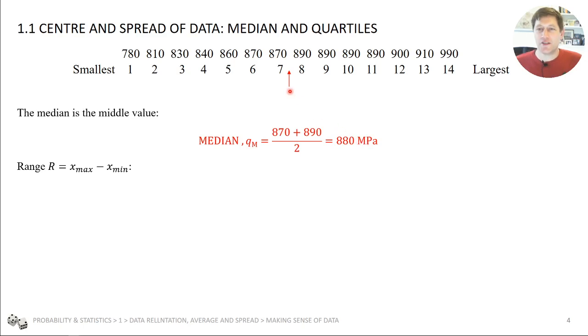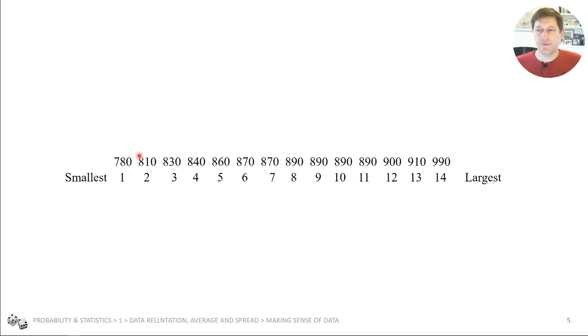The data extends around that median, so the simplest measurement of that is the range. That's the largest value minus the smallest value. And here we have a range of 210 MPa.